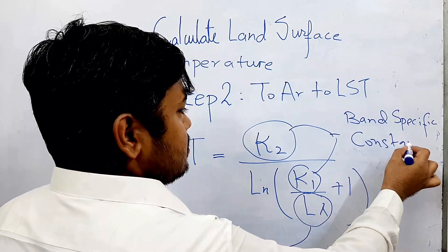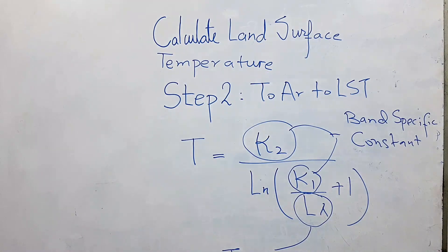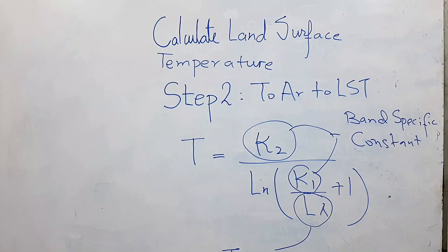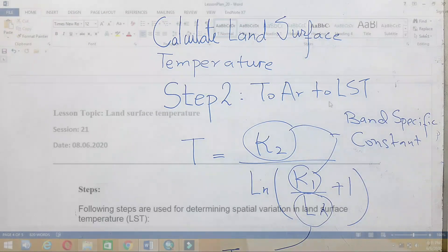Now we will sit at the computer and calculate this using ArcMap. There are just two steps: first is to calculate L lambda, and then to convert L lambda into land surface temperature. Let's see on the computer screen how we can do this in ArcMap.